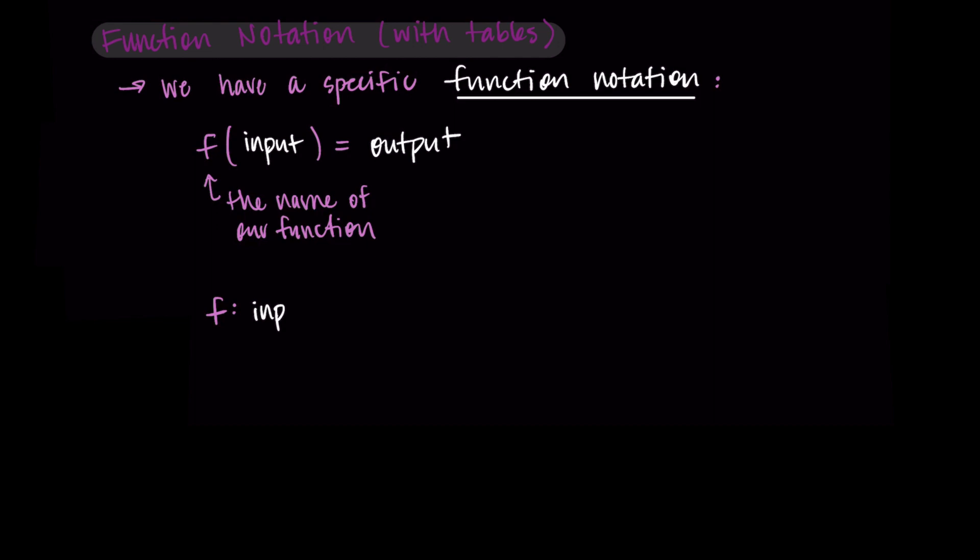Another way to write this is that f takes the input and maps it to the output. So we would use f and then a colon, and then we would say the input gets mapped to, that's that arrow with the line, is mapped to the output. This is just to show that the function takes the input and provides us the corresponding output. This is why it's so important that there is only one output for every input. The function needs to know which output goes with the input.